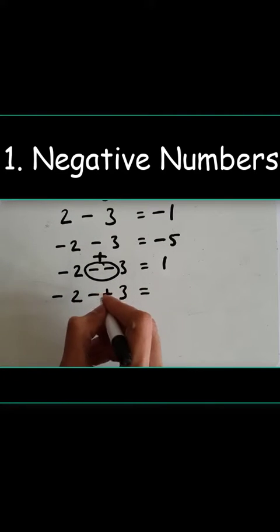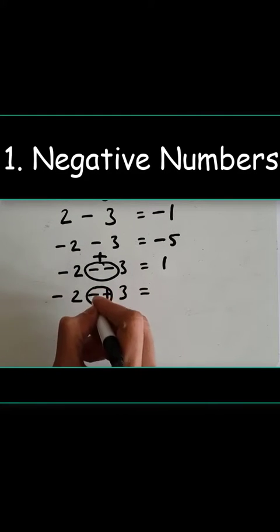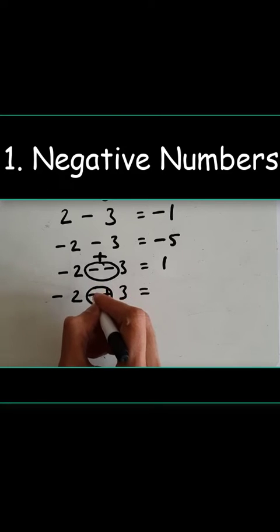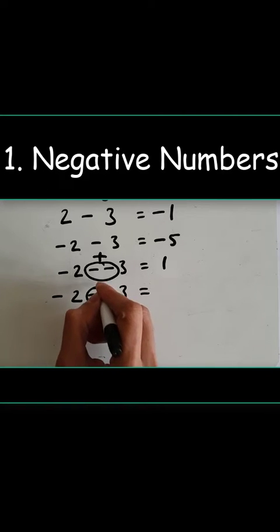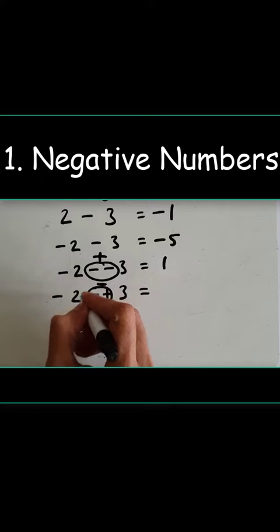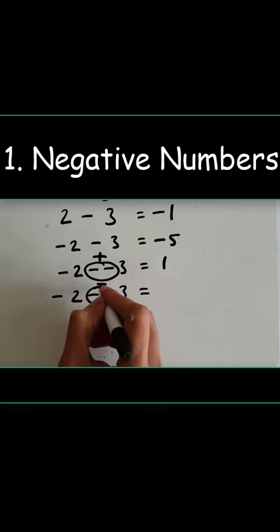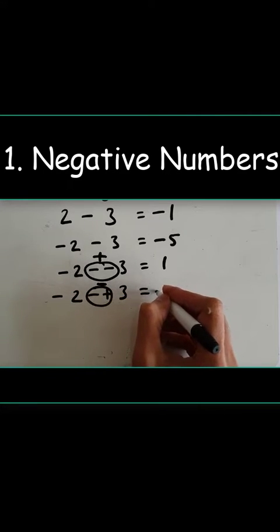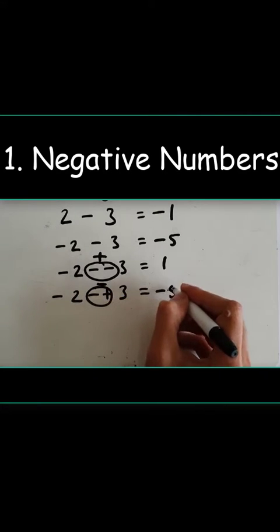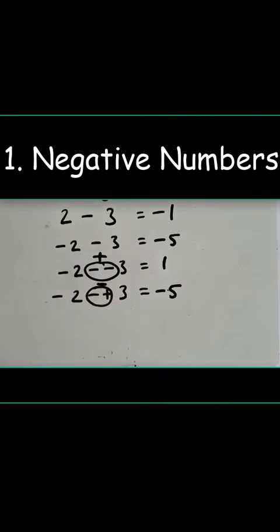Minus 2 minus plus 3 — again, two signs next to each other, so we change it to one. The signs are different: a negative and a positive become negative. So minus 2 minus 3 is minus five.